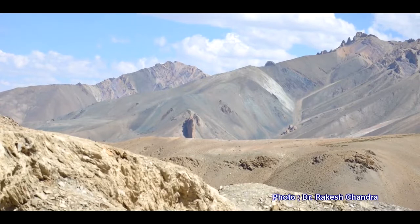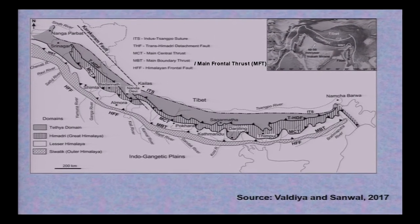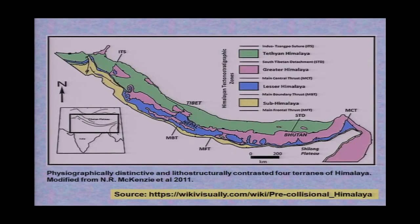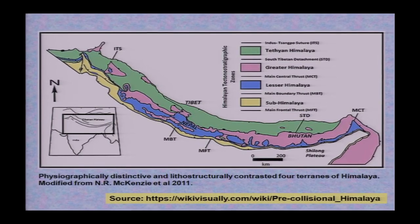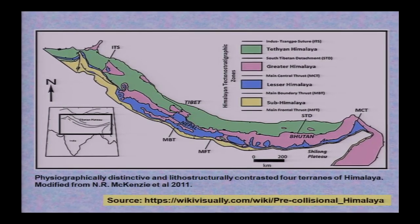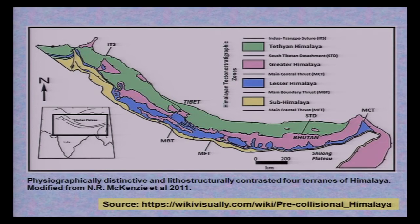Ophiolite melange is an exotic mixture of various types of rocks. Beyond that we go to Tibet and China. The various colors indicate, as mentioned: the Indo-Tsangpo Suture Zone, outer Himalaya, lesser Himalaya, Main Central Thrust, and the Indo-Tsangpo Suture Zone. Note that Tsangpo is the Chinese name for the Brahmaputra river.